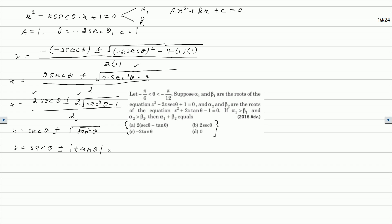Further, x equals secθ plus or minus √(sec²θ minus 1). Since sec²θ minus 1 equals tan²θ, we get √(sec²θ minus 1) equals |tanθ|. For theta varying from minus pi by 6 to minus pi by 12, theta is in the fourth quadrant, so tanθ is negative, meaning |tanθ| equals negative tanθ. Therefore x equals secθ minus tanθ or x equals secθ plus tanθ. So the two values are: first value is secθ minus tanθ, second value is secθ plus tanθ.